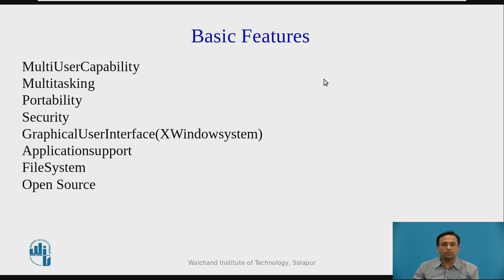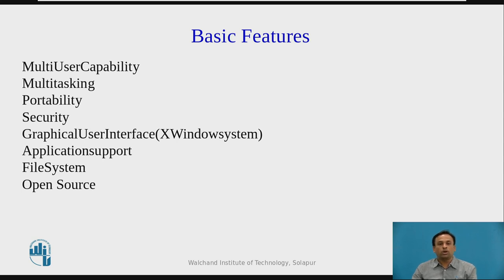Now we will see the basic features of a Linux operating system and why it has become so famous. First is multi-user capability — multiple users can access the same resources like memory and hard disk, but they must use different terminals. Next is multitasking — more than one function can be performed simultaneously by dividing CPU time. Portability means it supports different types of hardware. Security is one of the most important features; Linux provides higher security than any other OS through authentication by assigning passwords and login IDs, authorization by assigning read, write and execute permissions, and encryption which converts files into an unreadable format.